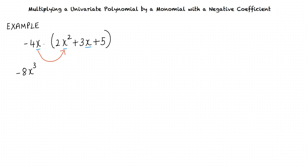We multiply 2x square by negative 4x and we get negative 8x cube. Notice that we have multiplied the constants as well as the variables since the same variable has been involved. Next, we multiply 3x by negative 4x and we get negative 12x square. Finally, we multiply 5 by negative 4x and we get negative 20x.